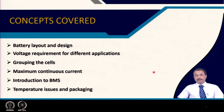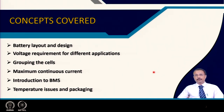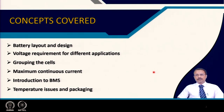We will cover voltage requirements for different applications, to give you some idea of the genesis of these voltage requirements and how to group cells to increase both voltage and capacity. Then we'll look at continuous current requirements and how to estimate maximum continuous current from a battery pack. We will also introduce the battery management system — what it is needed for and why almost all big battery packs need it, though for smaller packs of 2–3 cells you can omit it. BMS will be covered in more detail in the next lecture, along with temperature issues and packaging.